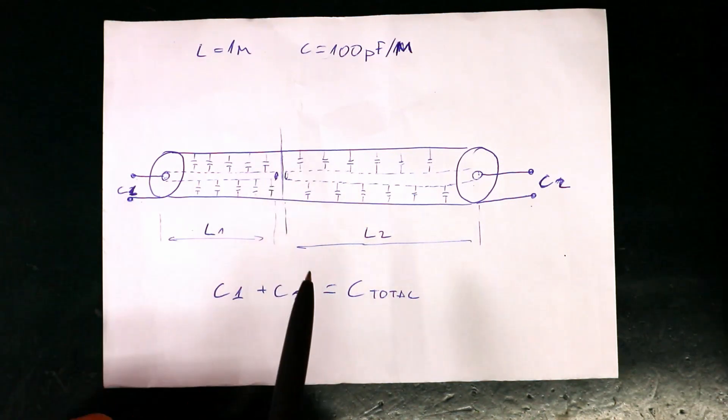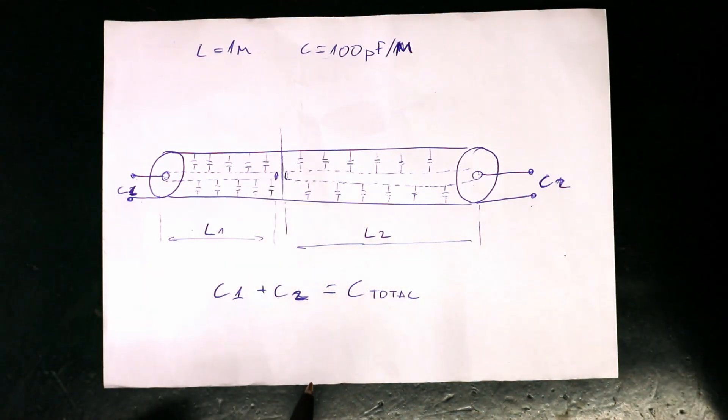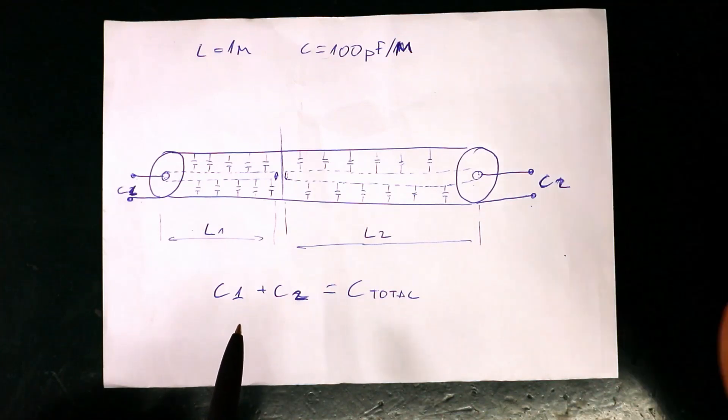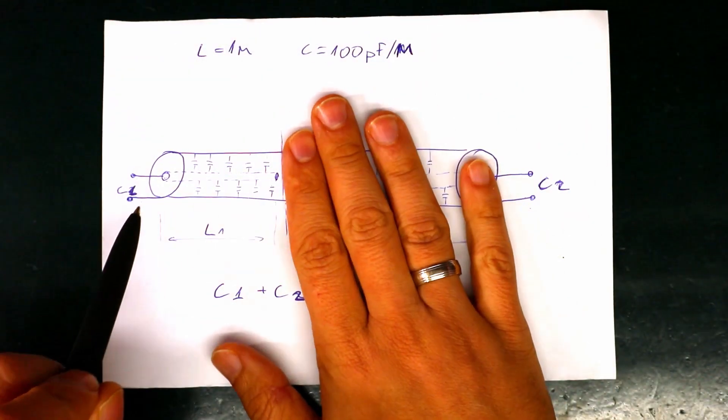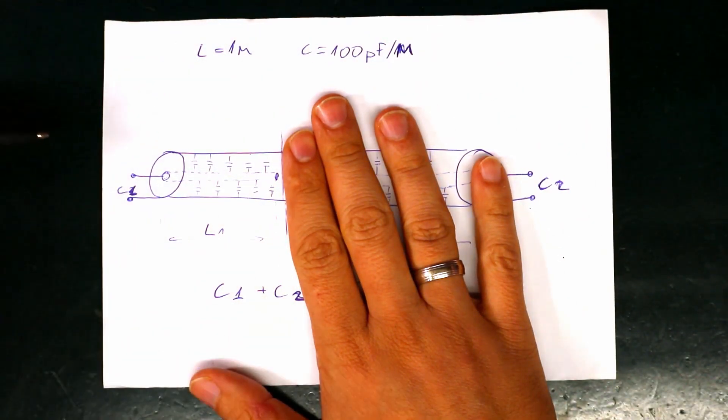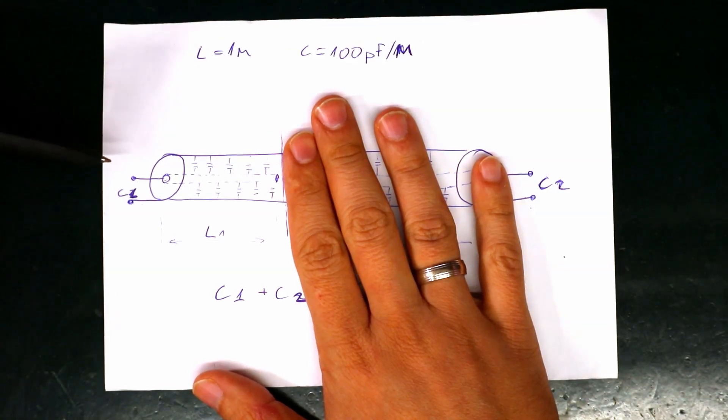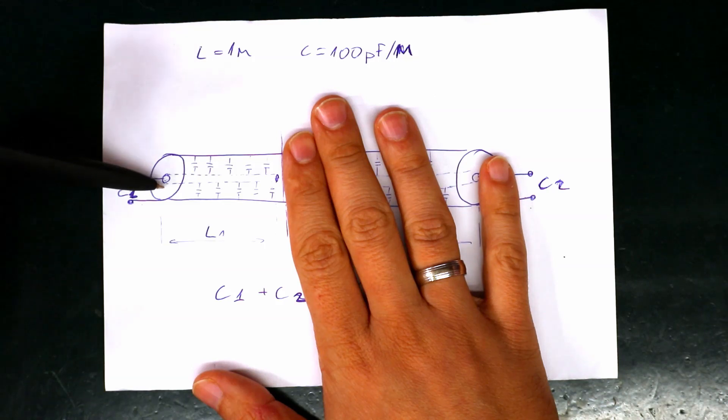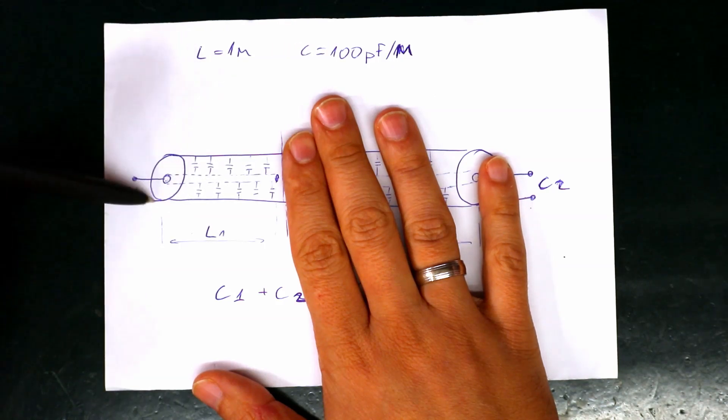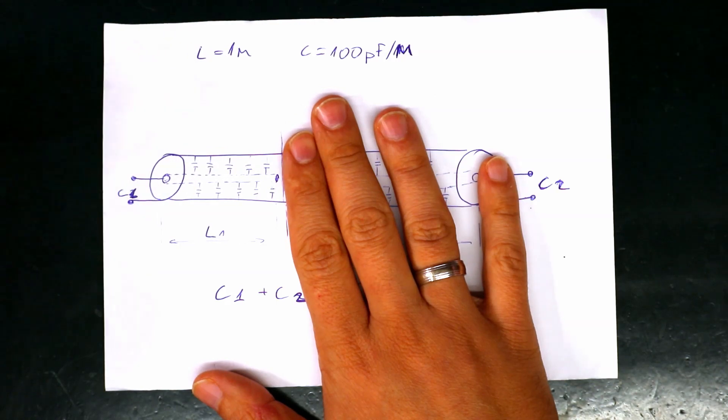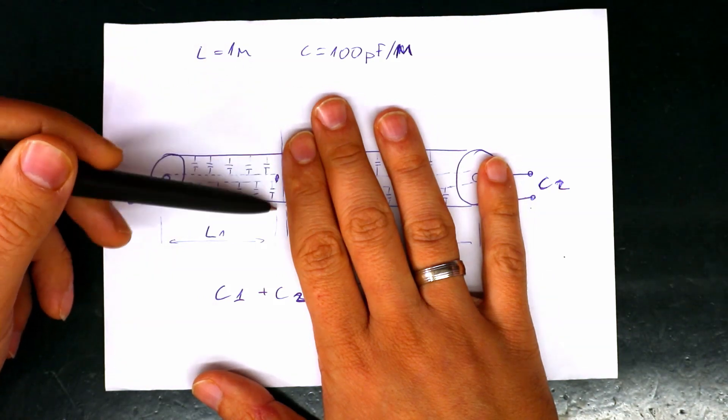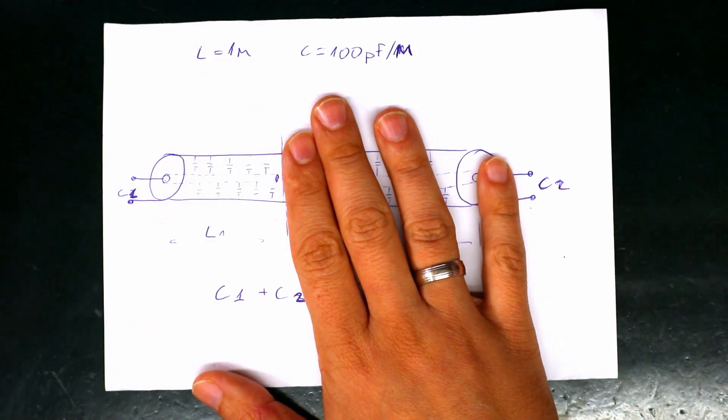But we could measure the capacitance from one side let's say from the left side and to do that we need to measure the capacitance with an LCR meter from the signal wire and the shielding and this gives us the capacitance of the cable up to the open circuit or this is let's say C1.